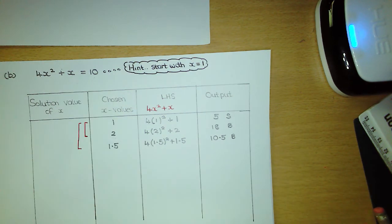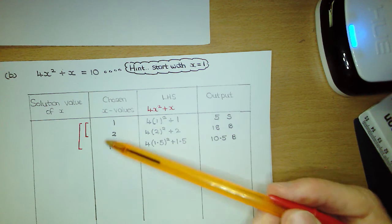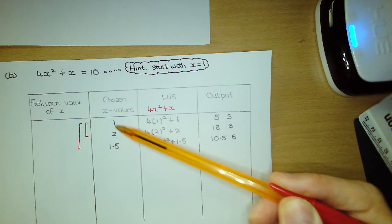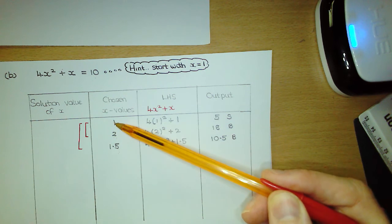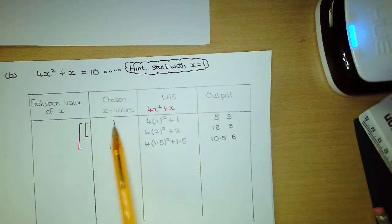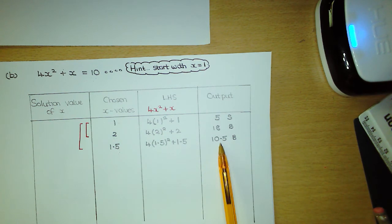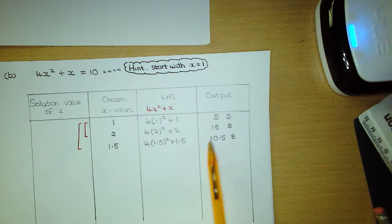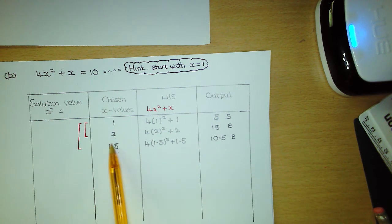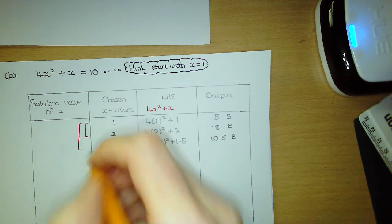Draw a line connecting 1 and 1.5 — that's where the solution value lies. The next value of x depends on the values at each end of the gap, which are 1 and 1.5. Notice those x values do not have the same number of digits, so we can't go halfway. Instead, look at the output values: we have 5 and 10.5. We look for the output closest to the target number of 10. Clearly 10.5 is closer to 10 than 5 is, so the next x value must be closer to 1.5 than to 1. The next x value we pick is 1.4.